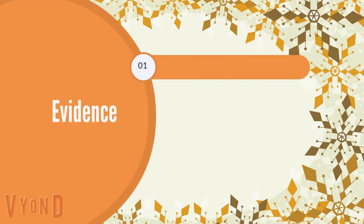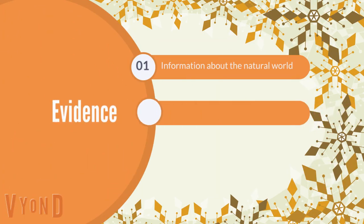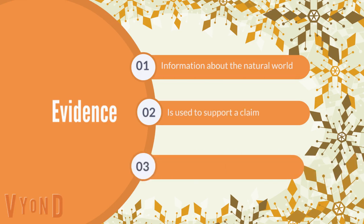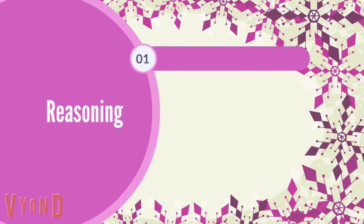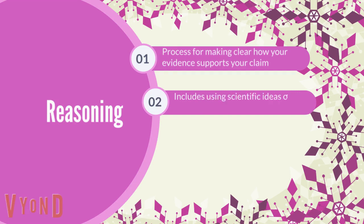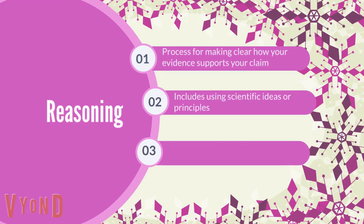Evidence is information about the natural world that is used to support a claim. In scientific argumentation, evidence includes data such as observations and measurements. Reasoning is the process for making clear how your evidence supports your claim. In scientific argumentation, clear reasoning includes using scientific ideas or principles to make logical connections to show how the evidence supports the claim.